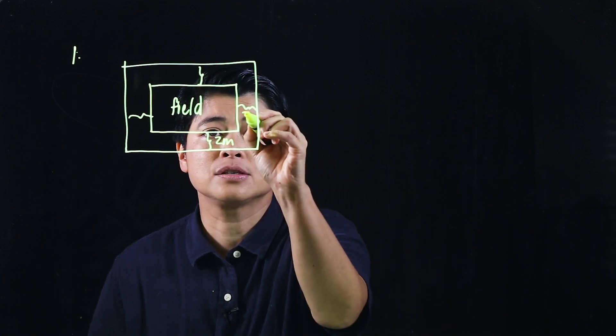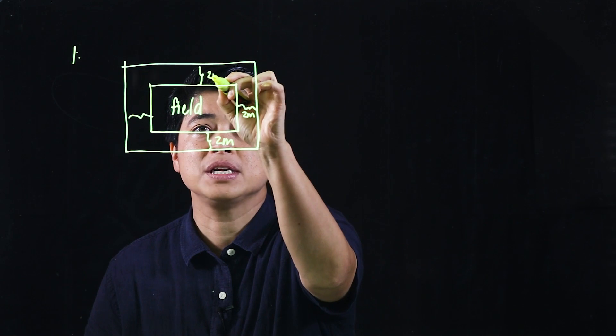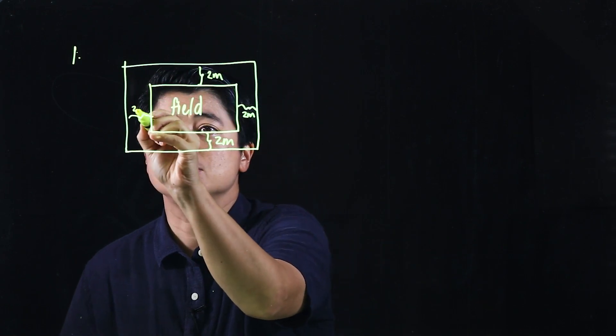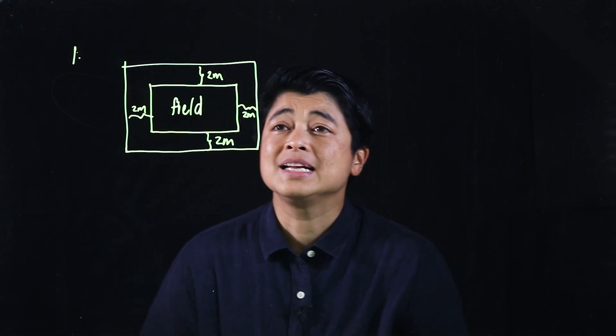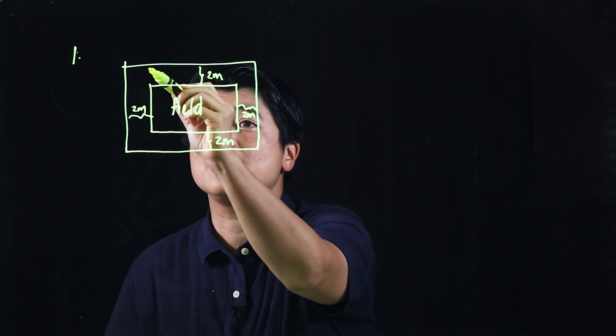That is two meters, that's two meters, that's two meters, and this is two meters. It's asking for what is the area of the path.